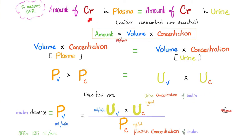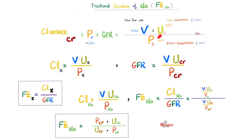Now it's some math time. From my video on the eGFR, the amount of creatinine in the plasma equals the amount of creatinine in the urine because the kidney excreted creatinine from plasma to urine — same amount. Since amount equals volume times concentration, volume times concentration in the plasma equals volume times concentration in the urine. The unknown is the volume of plasma that is filtered — i.e. the clearance of creatinine, i.e. the GFR. So the clearance equals urine volume per minute times concentration of creatinine in the urine, divided by concentration of creatinine in the plasma. This is the GFR — same as clearance of creatinine or inulin. Clearance of anything is always: urine concentration of that substance over plasma concentration of that substance, times urine flow rate.